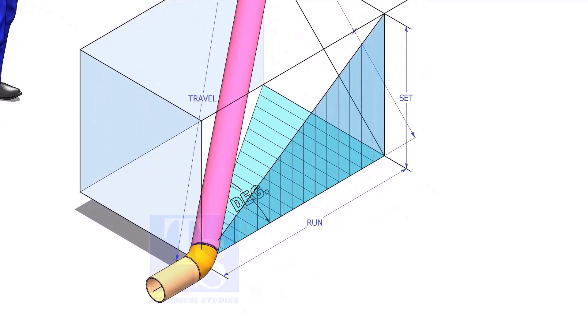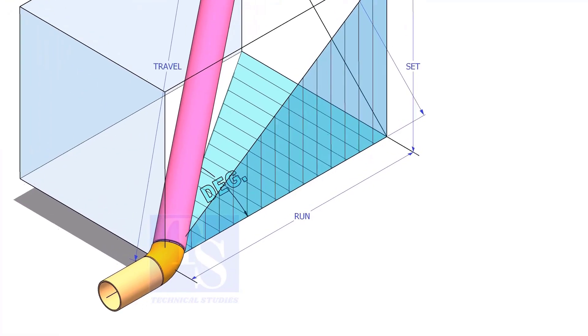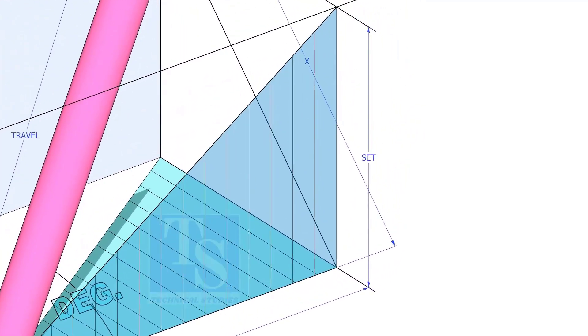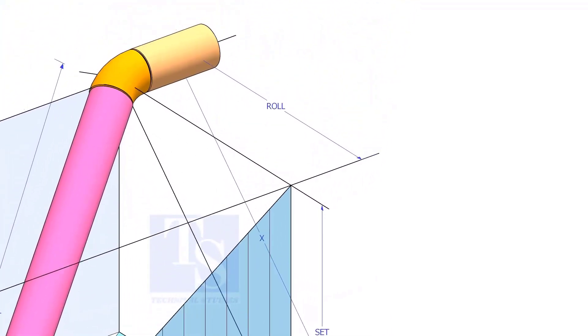In this video, I will show you how to calculate the travel length and the including angle of a double rolled offset pipe.